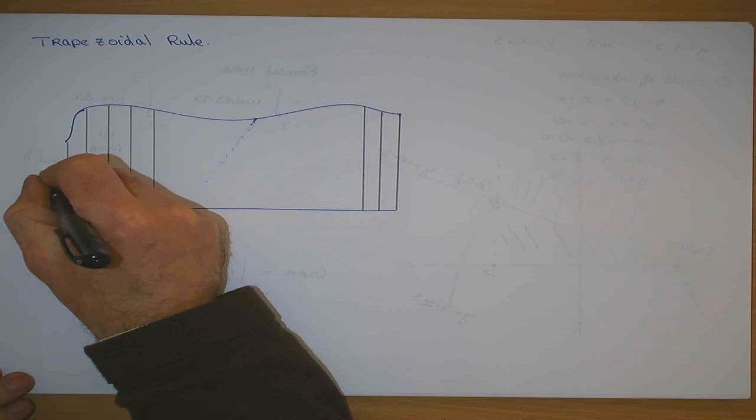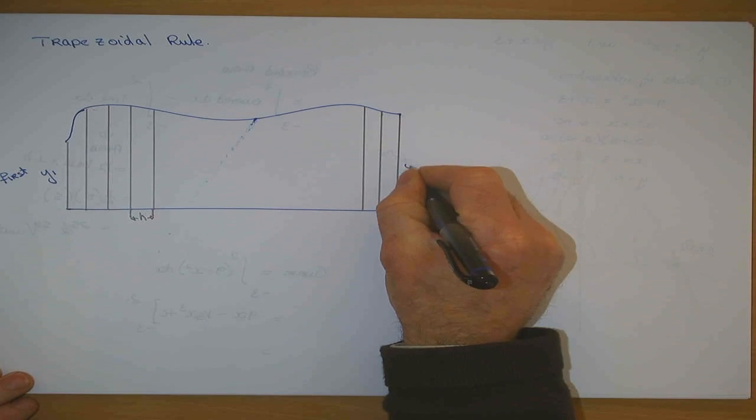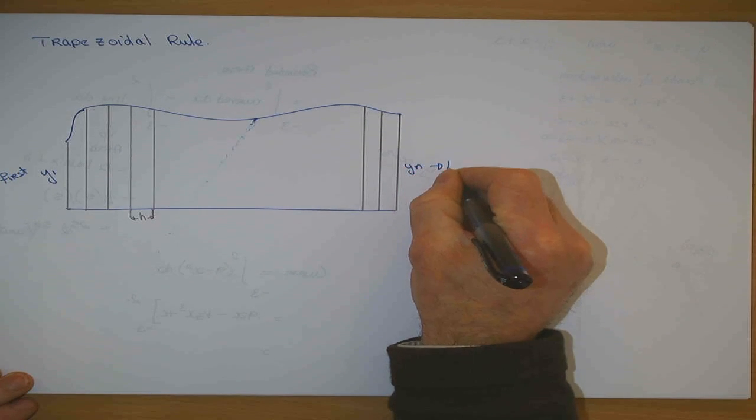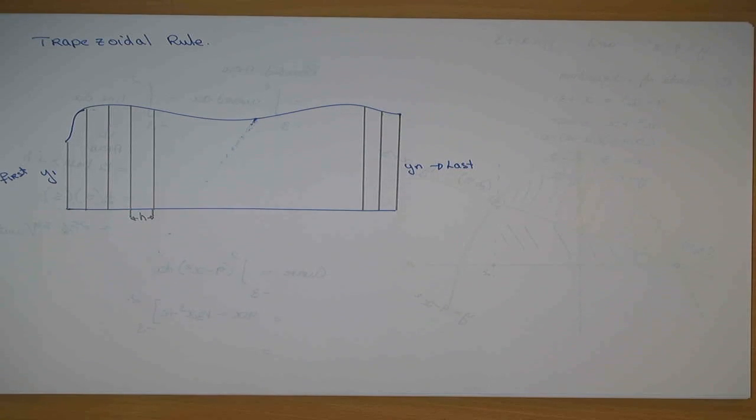This is called Y1, it is the first. And that is Y to the end, it is the last horizontal part of that rectangle.